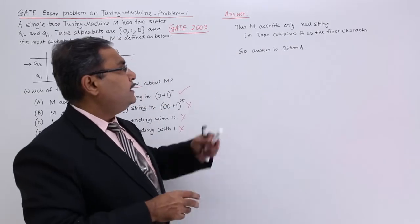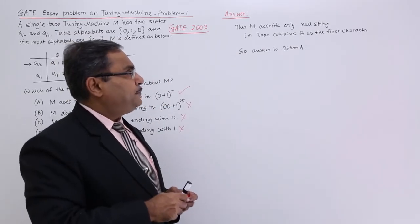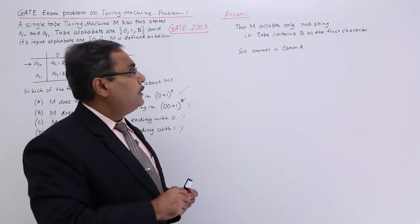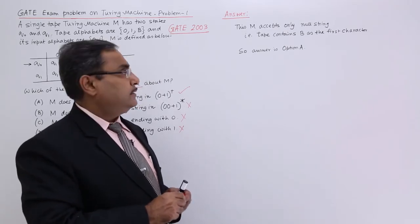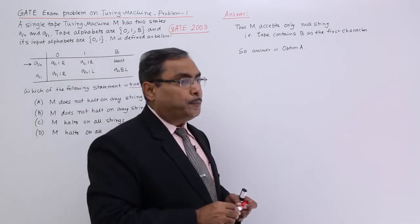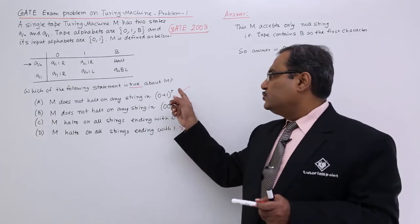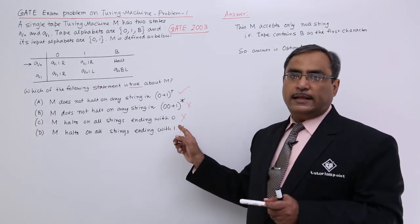That is why I have written this answer in this way. This M accepts only null string tape symbols B as the first character. So answer is option number A. In this way I have explained this particular answer.